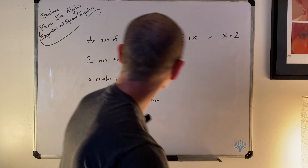Finally, 'a number and two together.' Together is a little ambiguous, but it doesn't mean multiplied, divided, or subtracted — it means added. So all four of these phrases communicate the same expression: two plus x or x plus two.